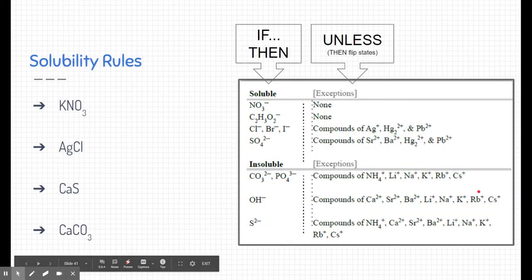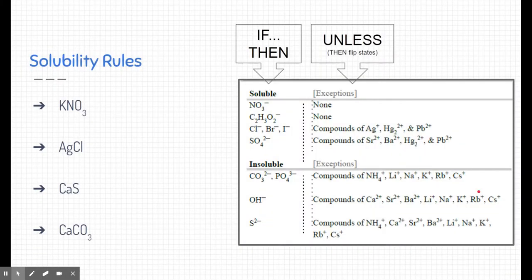So how do we know when this happens in a chemical reaction? We use this chart called solubility rules, which is found inside your periodic table. If you look at the back of the periodic table — which will be provided to you on tests and practices — you'll see this chart.